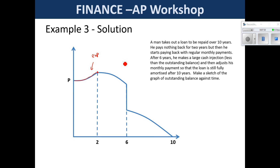Then, once payments start, the balance depreciates on a reducing balance — it's not linear. Initially you make very little impact reducing the outstanding balance; over time it gets traction and becomes a bit steeper. At six years the large cash injection instantaneously drops the balance, then a regular payment amortizes the loan so it ends at zero after 10 years with a gentle curve. This illustrates what happens when you're not paying, when you are paying, or when you make a big deposit.